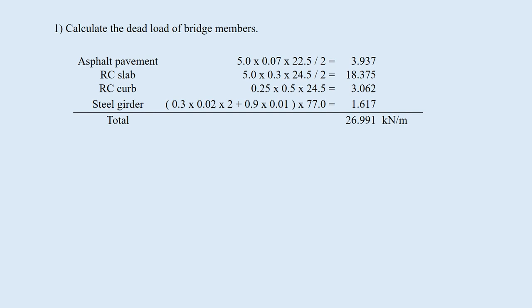1. Dead loads consist of the asphalt pavement, RC slab, RC curb, and steel girders. Find the cross-sectional area, which is multiplied by the unit weight. The total is the sum of these four bridge elements.